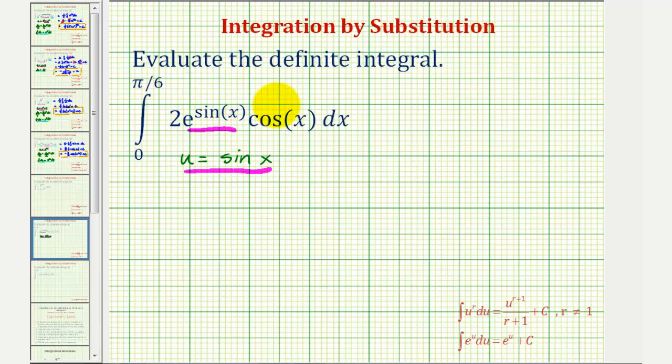Using this equation here, we could write this as e to the power of u. Now we'll find differential u so we can write this integral in terms of u. Differential u is equal to the derivative of sine x with respect to x times dx, so differential u is equal to cosine x dx.